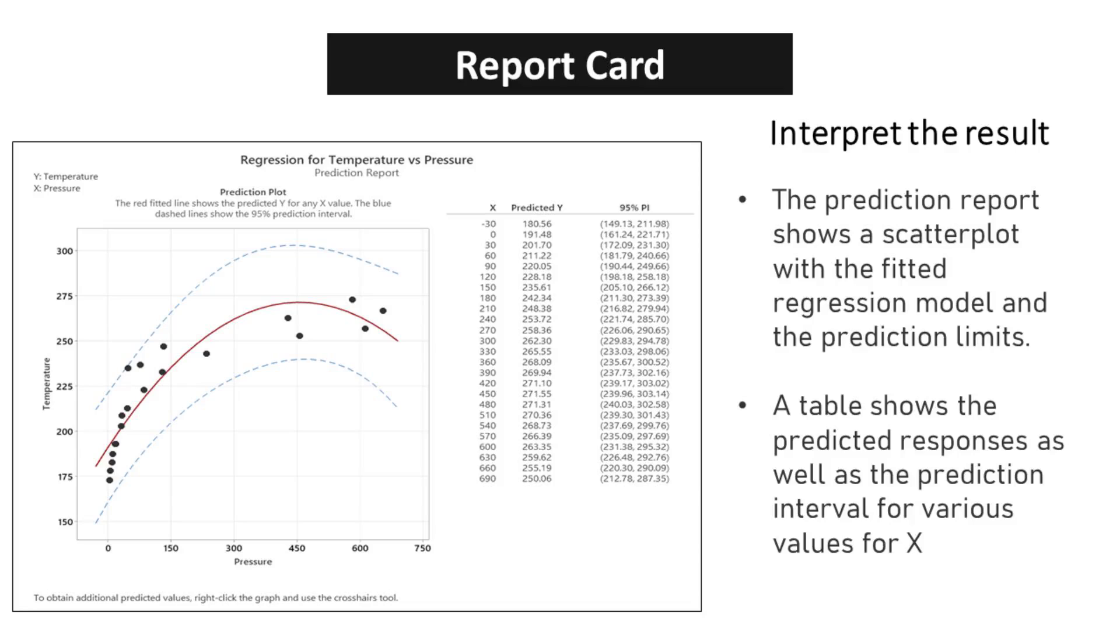The prediction report shows a scatterplot with the fitted regression model and the prediction limits. A table shows the predicted responses as well as the prediction interval for various values for X. This table is crucial in understanding the range of possible values for the predicted responses, giving us a clear understanding of the uncertainty associated with the predictions.